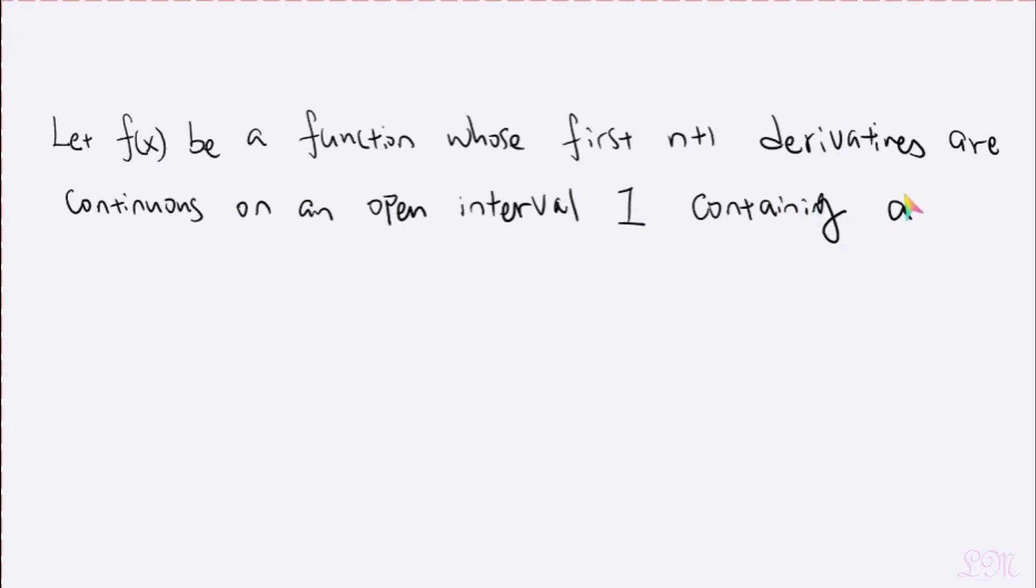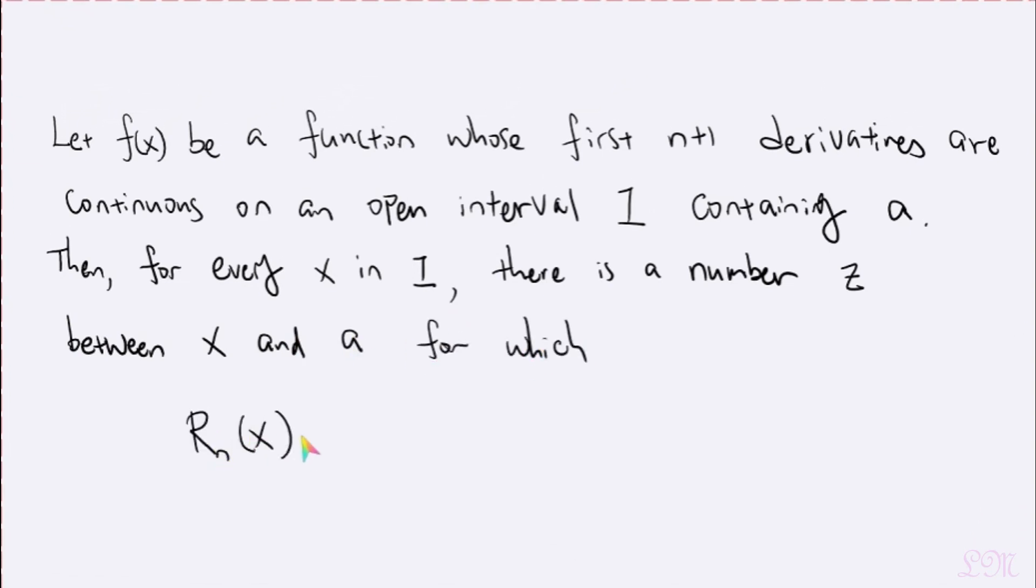so here a is still the center. Then our theorem guarantees that for every x in I, so for every x in our interval, there is a number z between x and a, for which R sub n of x, which still represents the remainder, is equal to the n plus 1th derivative of f of x evaluated at z times x minus a to the n plus 1st power divided by n plus 1 factorial.